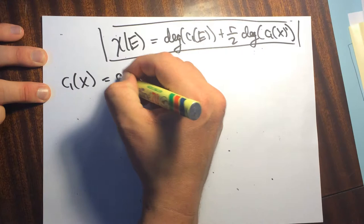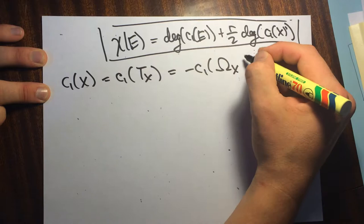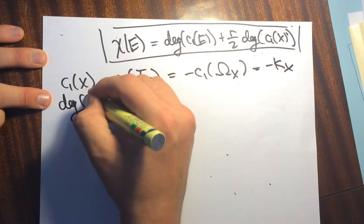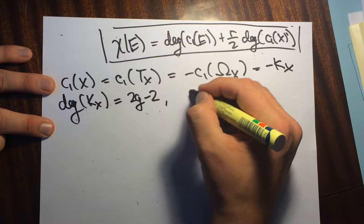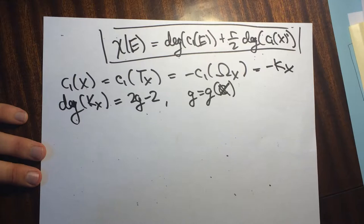Recall that C1 of X is C1 of the tangent bundle of X, which is negative C1 of omega of X — so this is just minus the canonical. The degree of the canonical is 2G minus 2, where G is the genus of the curve.